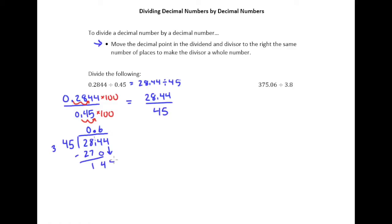Now I'll drop down my 4. 45 goes into 144. Again, 50 goes into 150 three times, and 45 is a little less than 50. So I think we'd be safe to try 3. So 3 times 5 is 15, 3 times 4 plus 1 is 13. So again, I made a pretty decent guess.